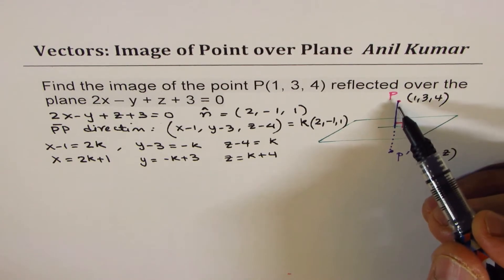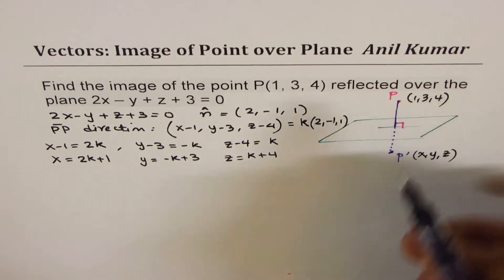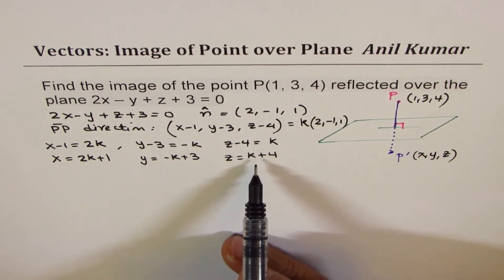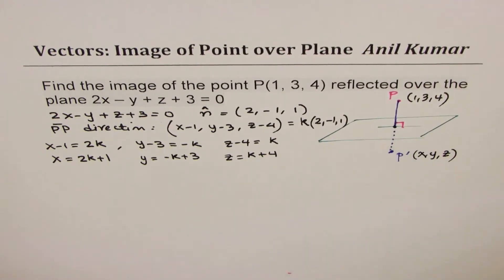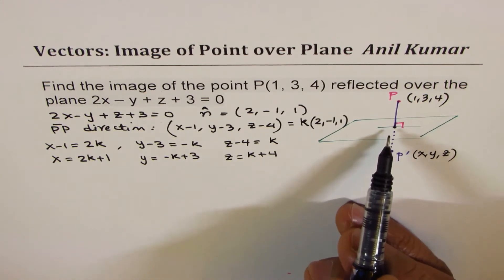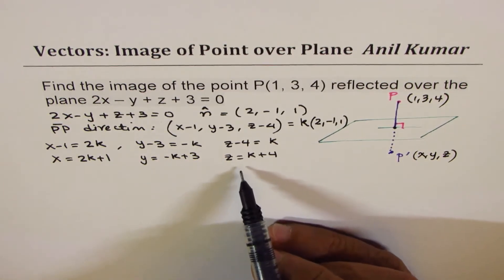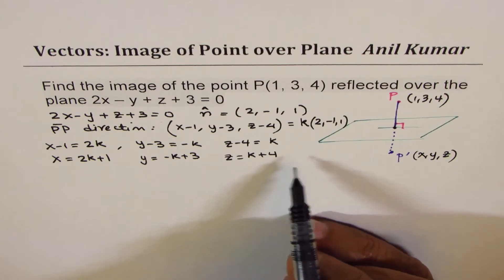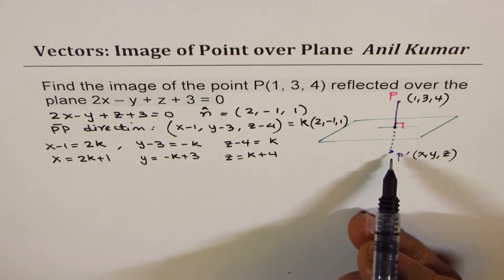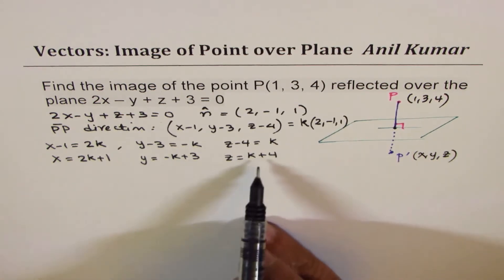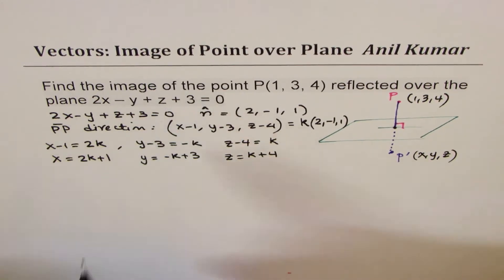Any point on this line can be represented by the scalar factor k. To find the value of k, we find the point on the line that lies on the plane itself — that is the midpoint M. We substitute the general x, y, z values into the equation of the plane.